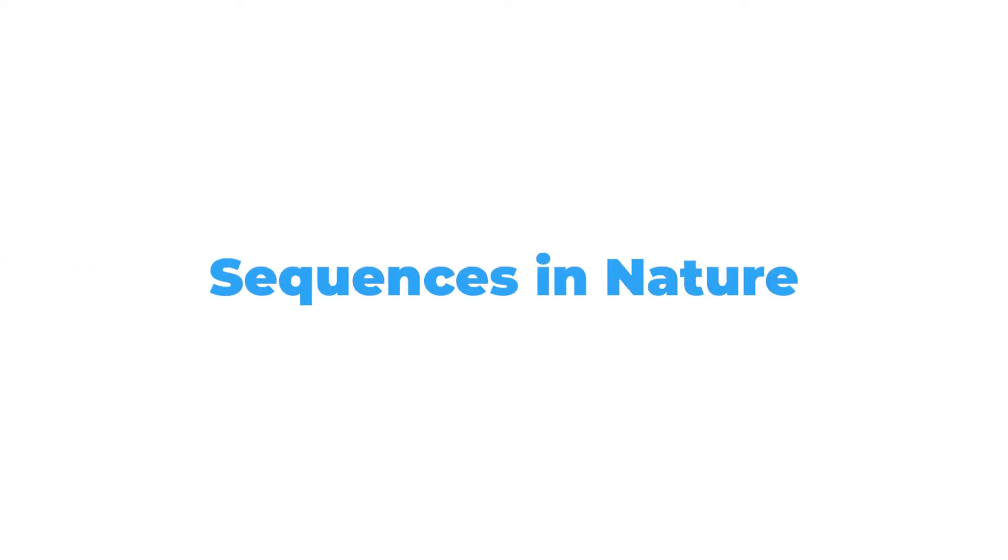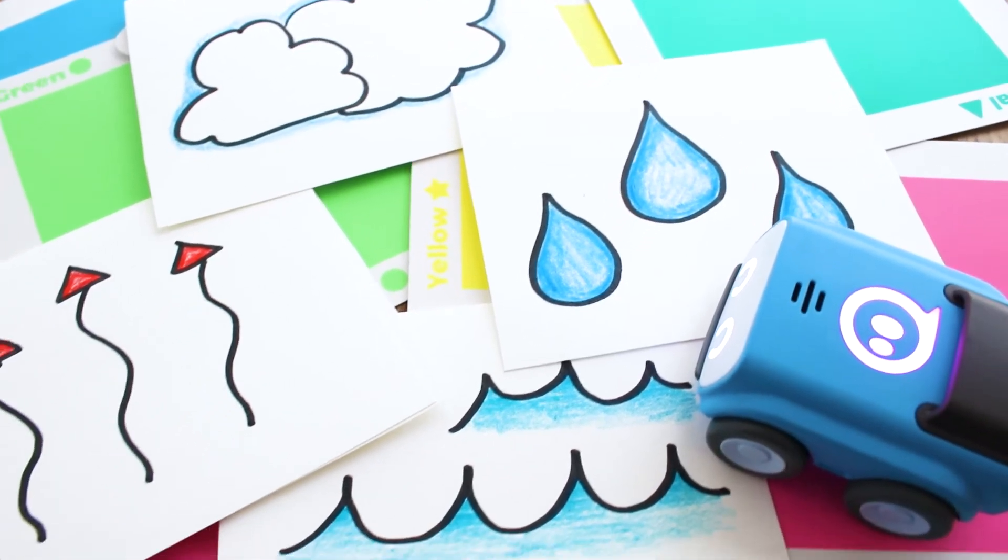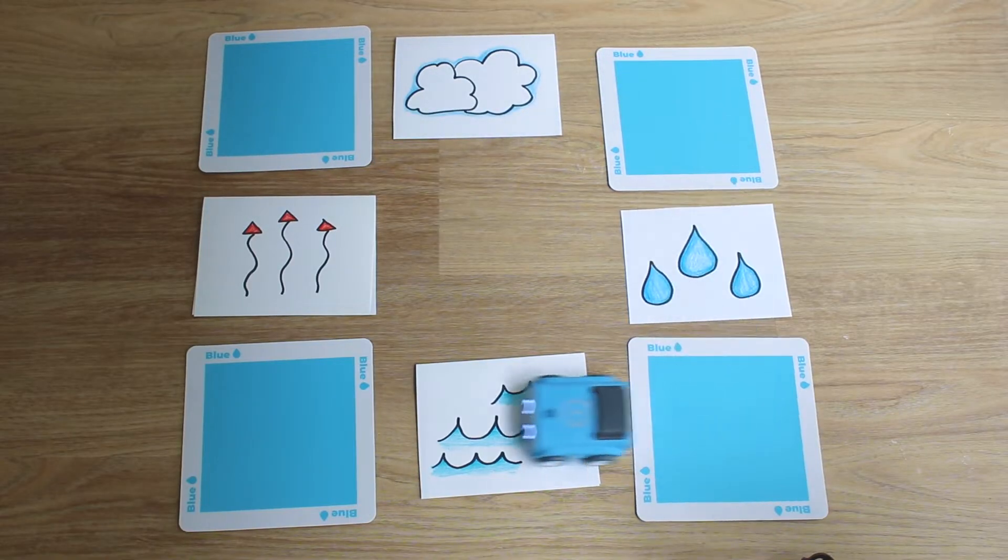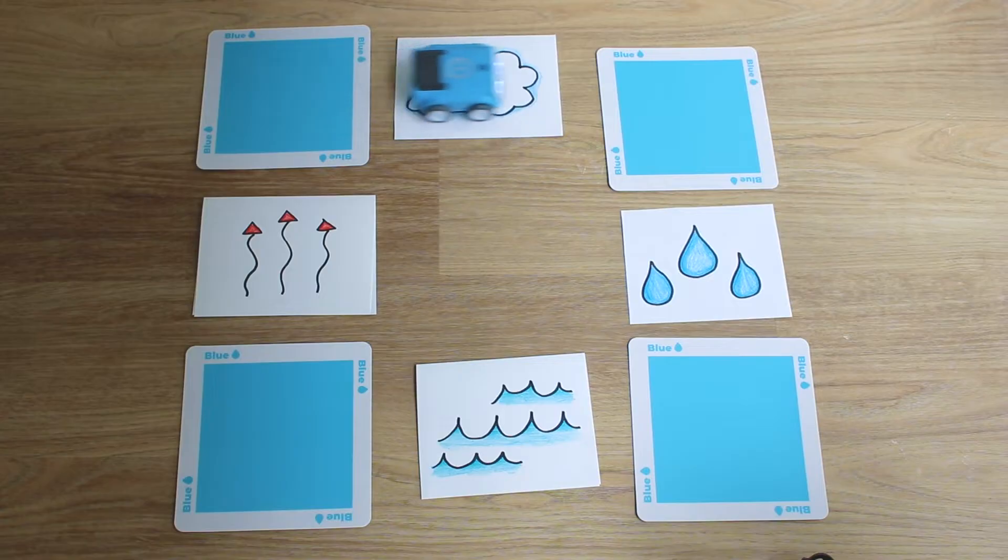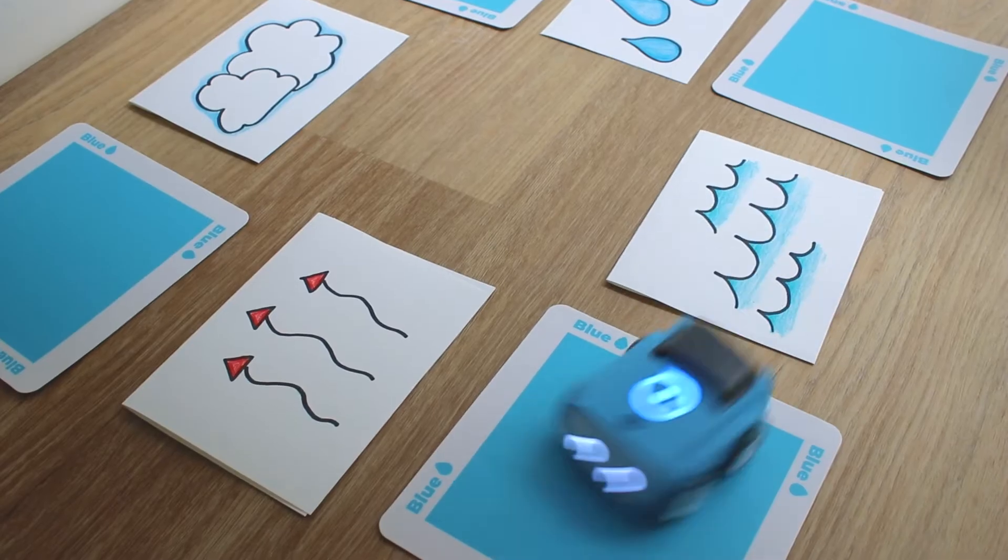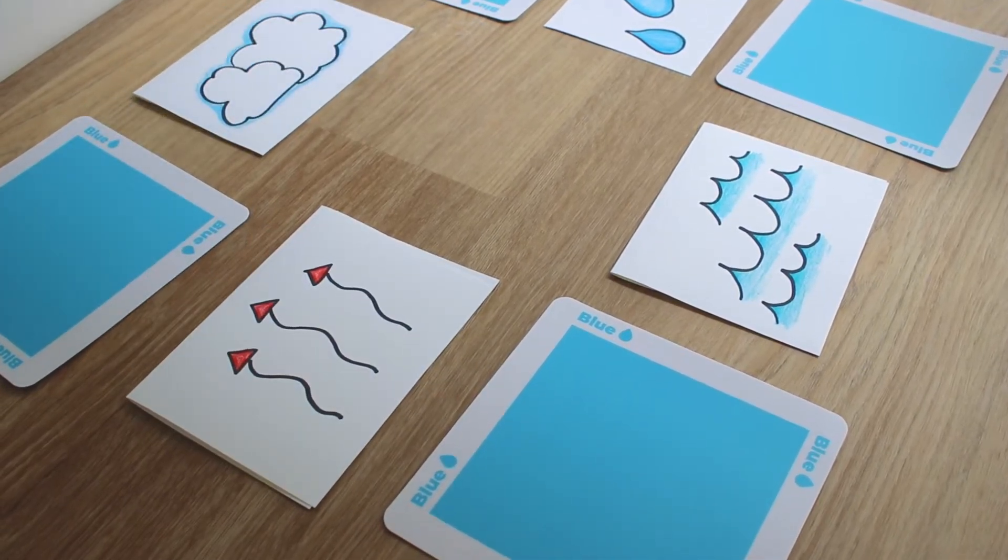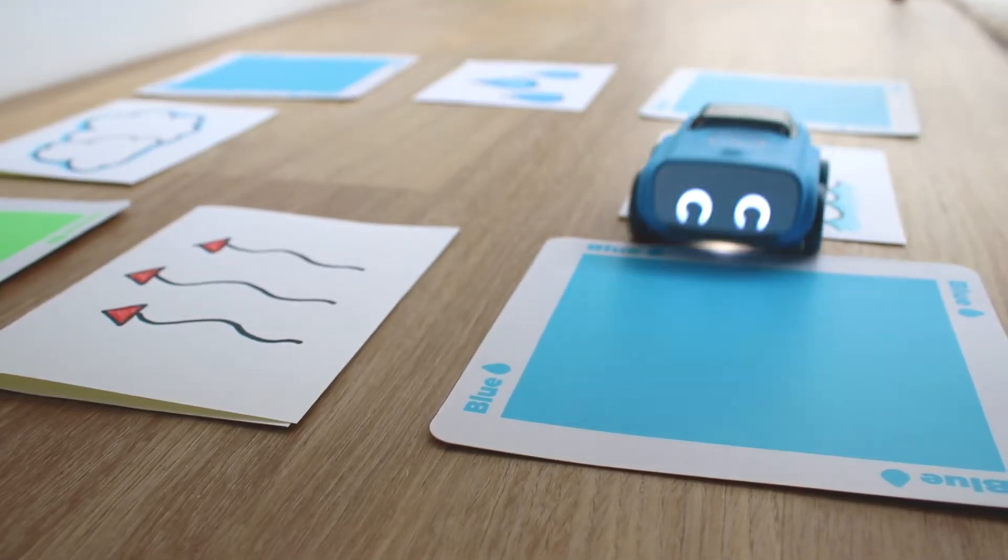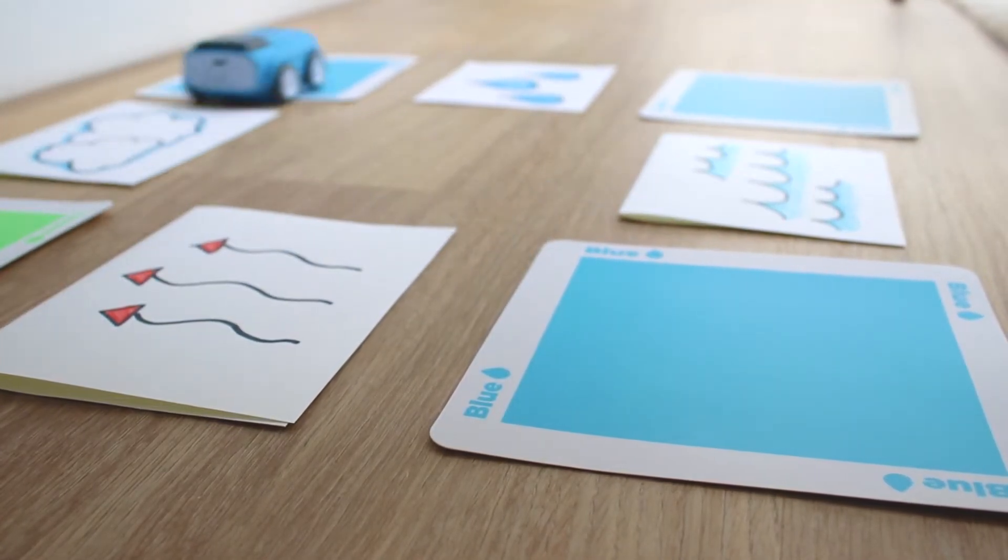In this activity, students will learn about sequences in nature by coding a looping sequence for Indy. Select or let students choose a sequence in nature, like the seasons, the water cycle, or the life cycle of a plant. Have students create a looping path with each tile representing a stage in the cycle marked by a designated item representing each stage.